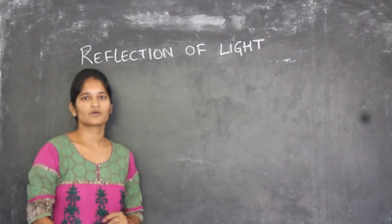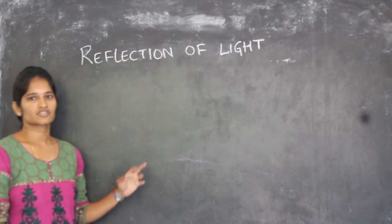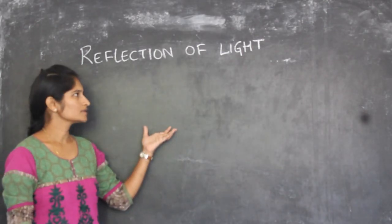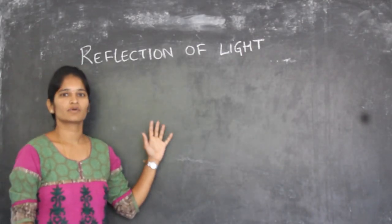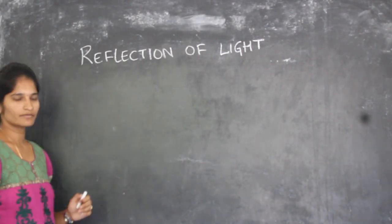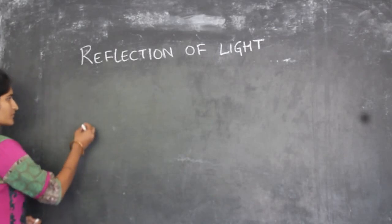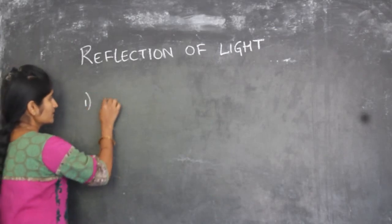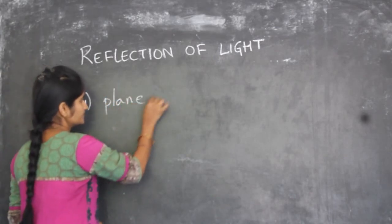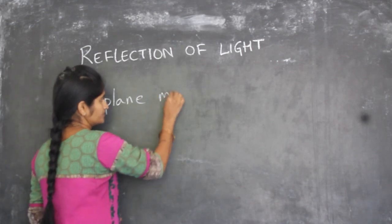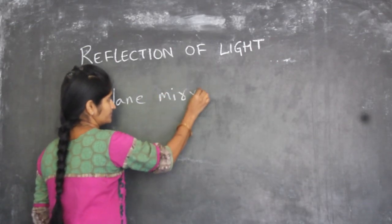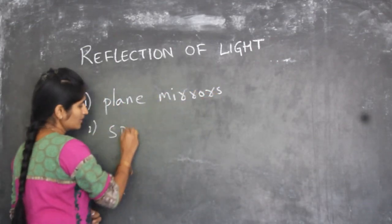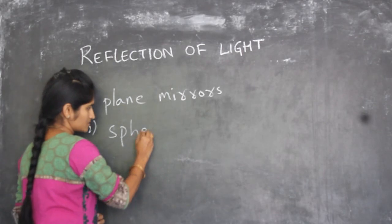Today we will discuss about the reflection of light, and in this we will see what are the types of mirrors we have. So first we have generally plane mirrors, and next are spherical mirrors.